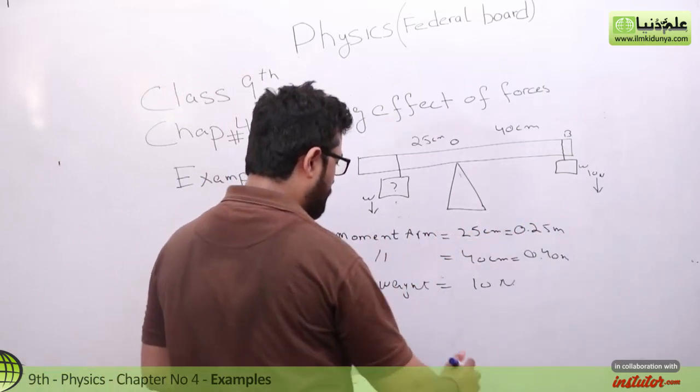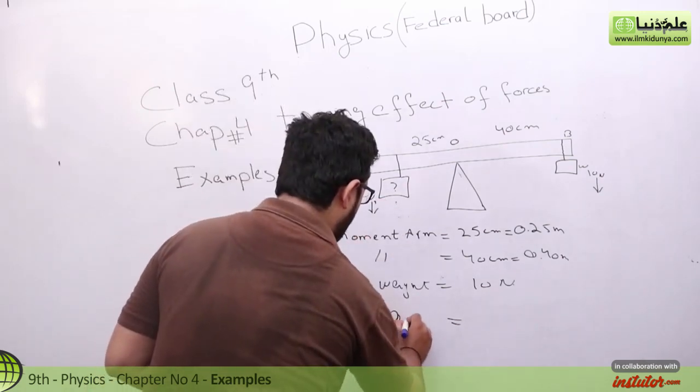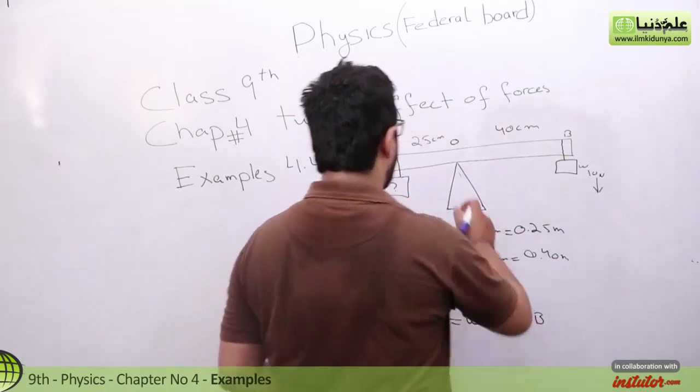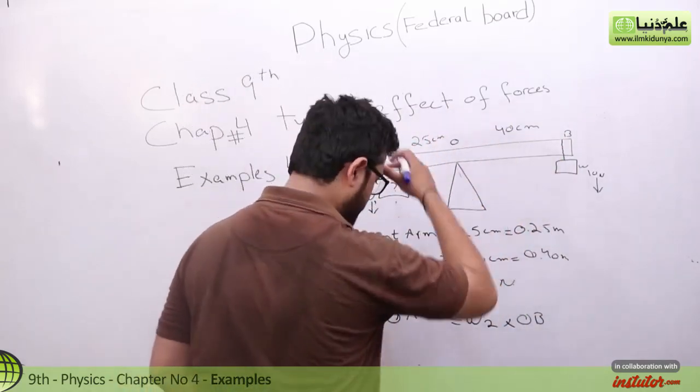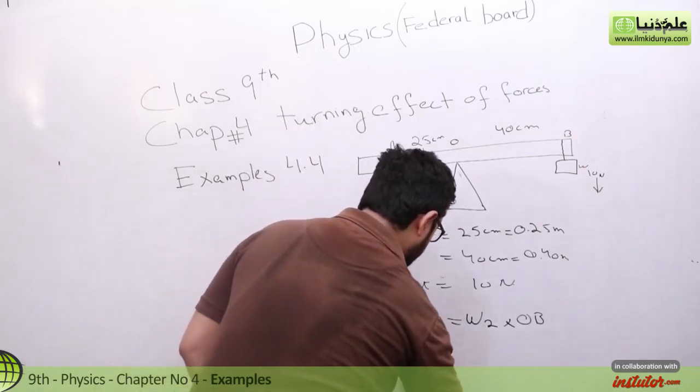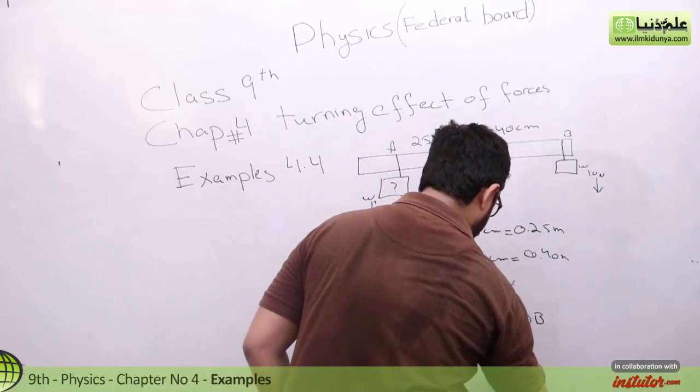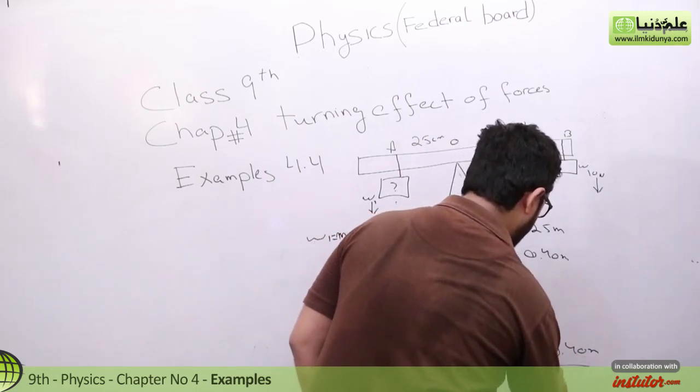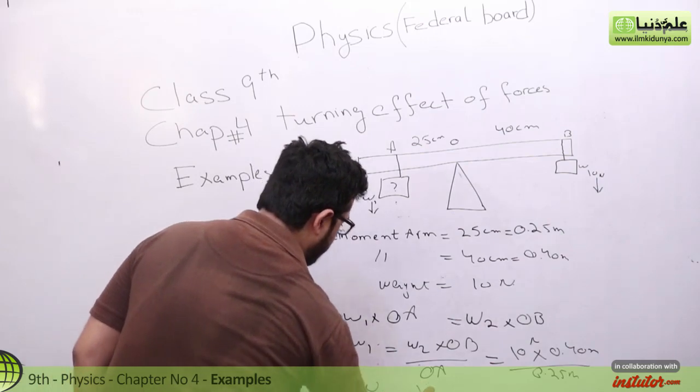We know clockwise moment and anti-clockwise moment are together. So this will be w1 we have to find. OA. W2 multiplied by OB. OA here. We have to find OA here this. W1 find OA this we have 0.40 cm. This we have 0.25 m when we solve we have a rate 16 N.